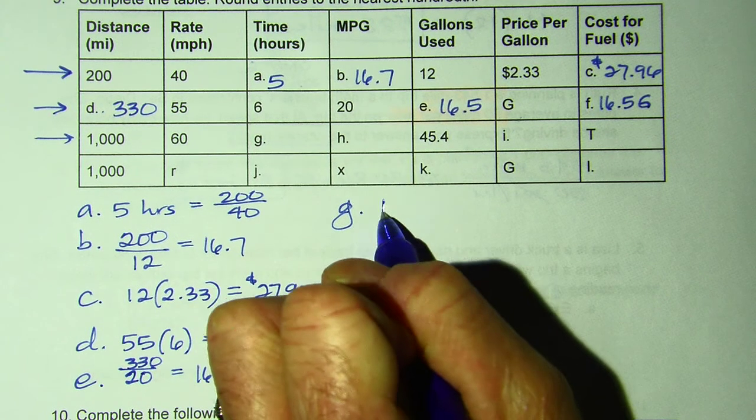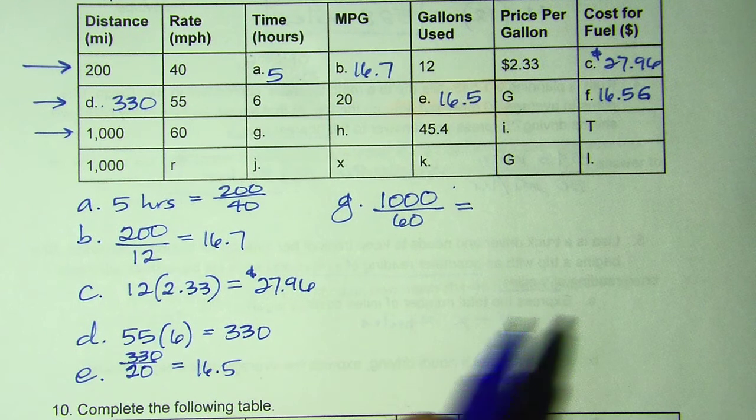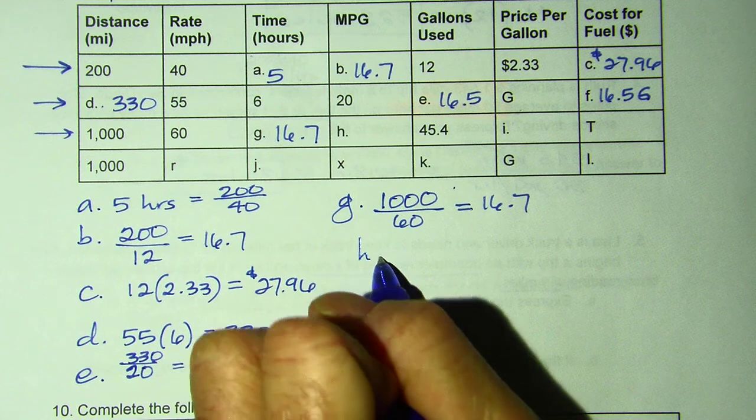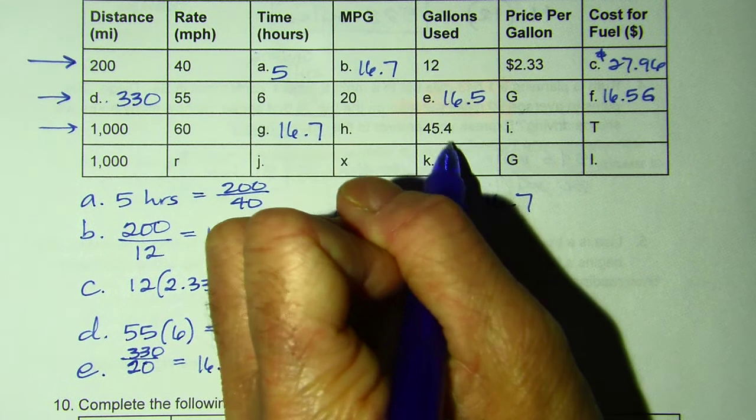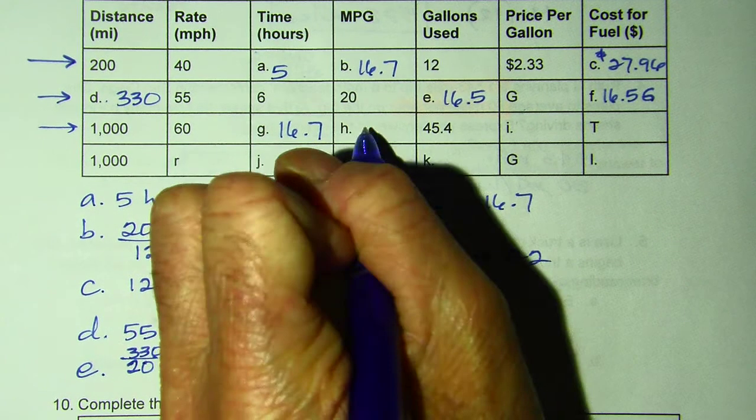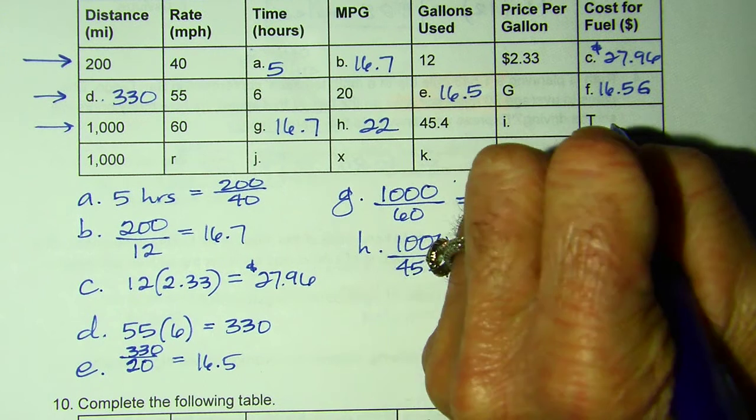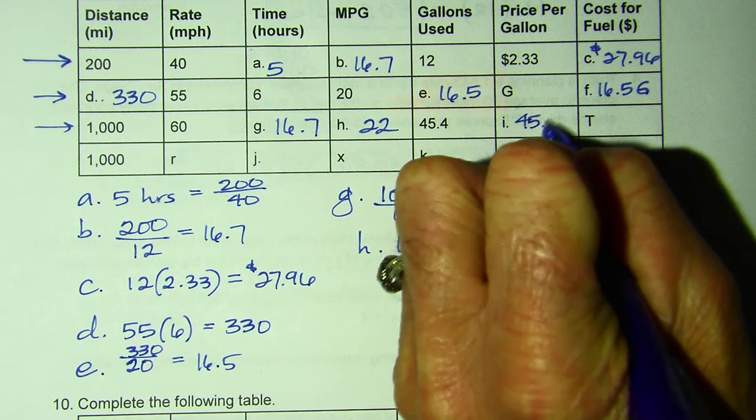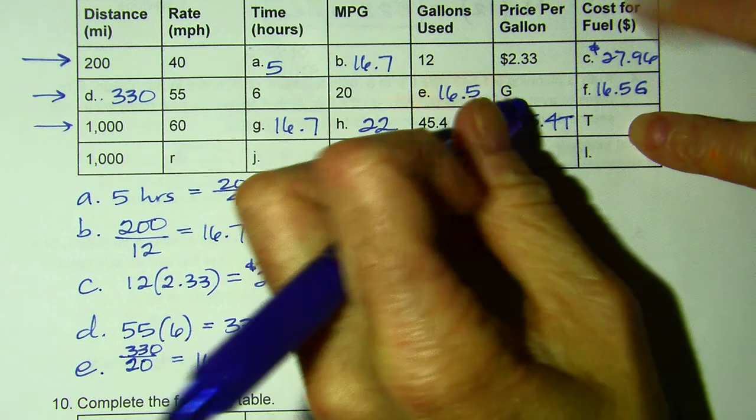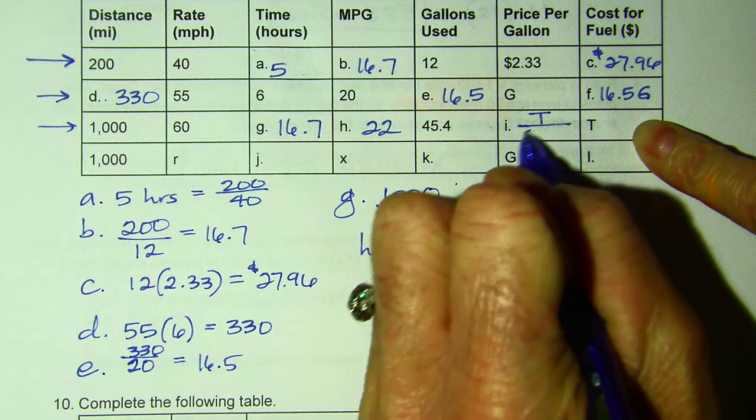Next row, I'm on part G. Part G, 1,000 miles, and I'm doing 60 miles per hour. That will tell me my total time. So 1,000 divided by 60, I got 16.7. Part H, miles per gallon. So I drove 1,000 miles. I used 45.4 gallons. If I divide that, I got 22. So it's telling me my cost is T. So it would be gallons used times the cost, which we don't know. Oh, sorry. This would be total cost. This is cost for fuel and total. So it would be my cost divided by the gallons used.